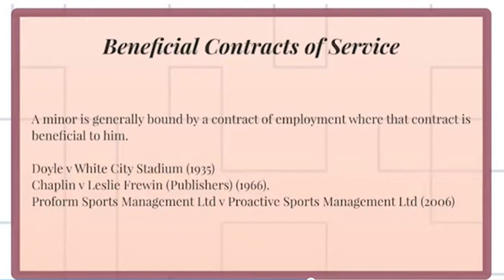In Proform Sports Management v. Proactive Sports Management in 2006, it was held that a player representation contract entered into by the footballer Wayne Rooney at the age of 15 was not enforceable against Rooney as he was a minor, but was voidable at his option.